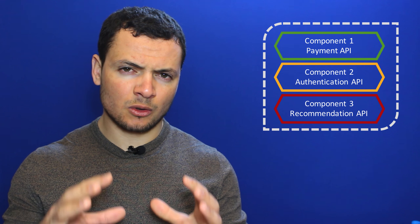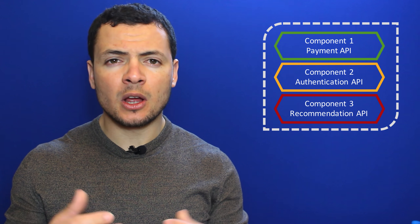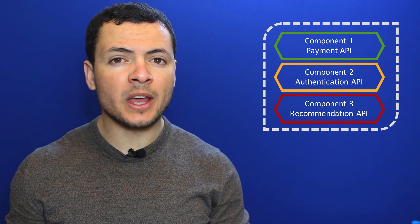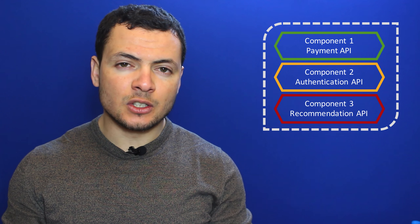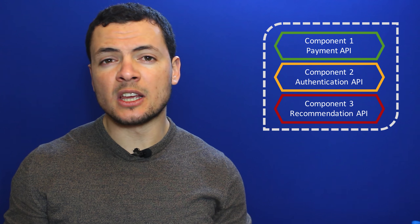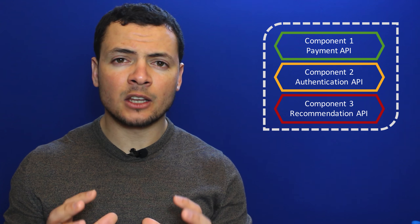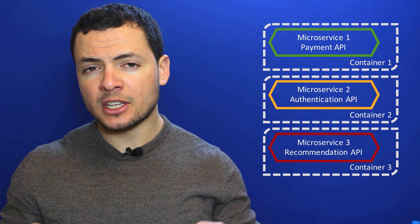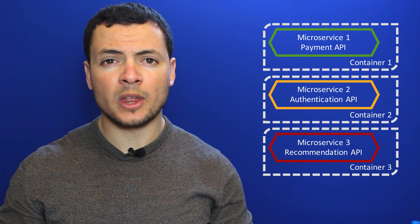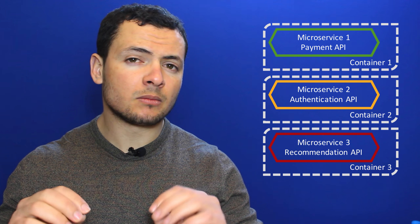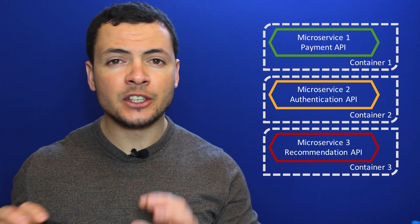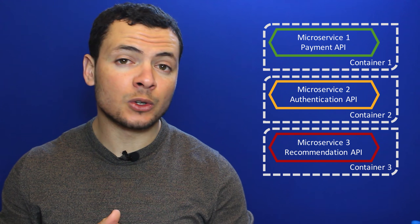We split the monolithic application into front-end and back-end, but we are still getting a growing number of requests, and most are hitting the back-end side, so the back-end is struggling to scale. What if we can split this back-end into multiple parts? This is where microservices come to play. If we analyze the back-end, we can see it is composed of multiple modules — modules for authentication, payment, recommendations, and many more.